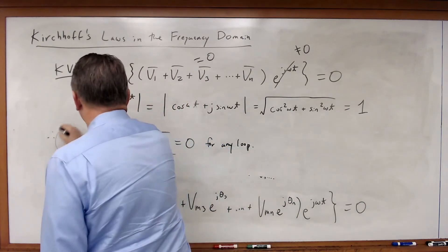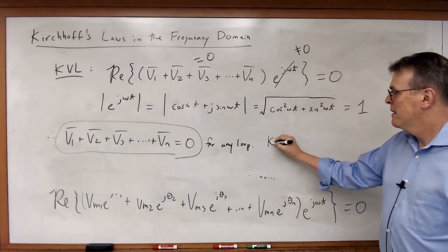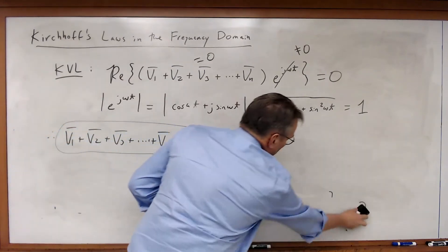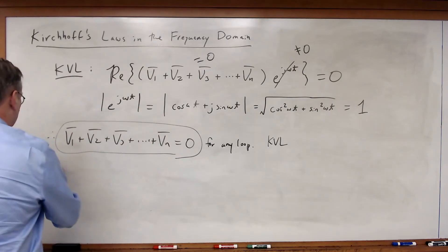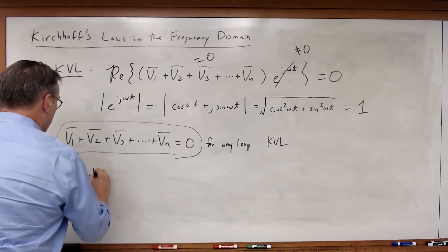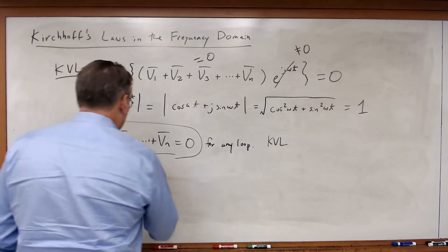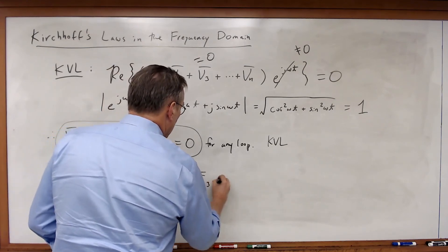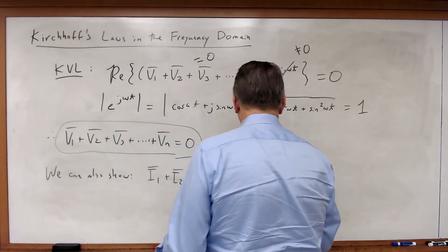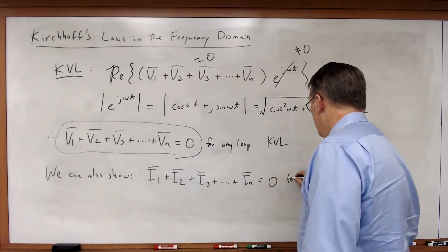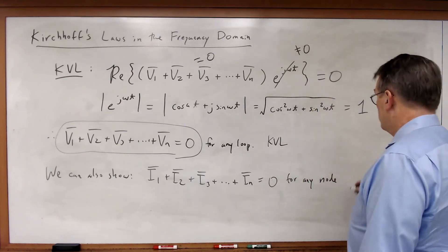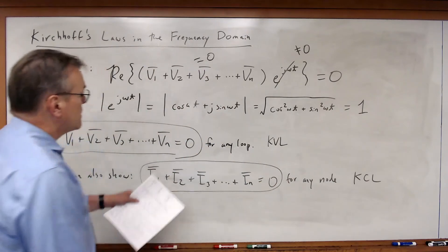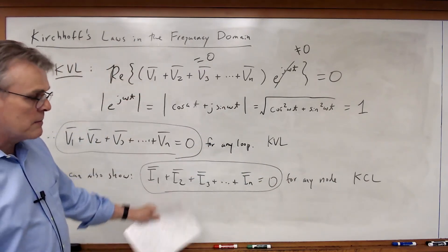Using the same mathematical development, we can also show that KCL holds: I1 phasor plus I2 phasor plus I3 phasor, all the way to I sub n phasor, must be equal to zero for any node. This is Kirchhoff's current law. I can prove this using exactly the same derivation we just did, simply substituting currents for voltages.